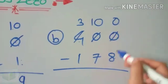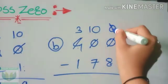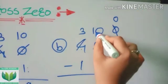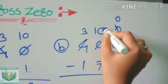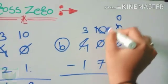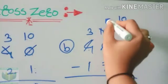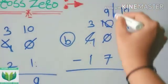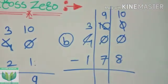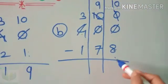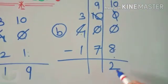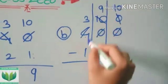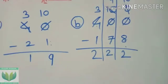Again 0 minus 8 is not going, so we have to cross out this 0 and write upside. We have to take 1 from the 10, so here becomes 10 and 10 becomes 9. Now 10 minus 8 is 2, 9 minus 7, and 3 minus 1.